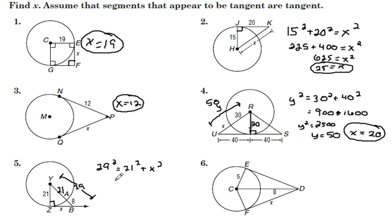We will subtract 21 squared from 29 squared. It comes out to 400. And the square root of 400 is 20. So our x is 20.